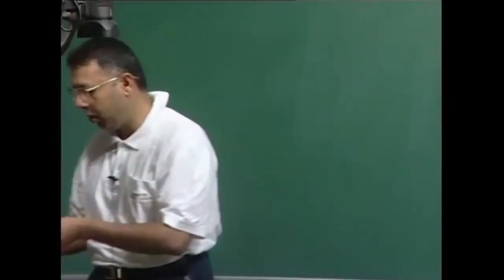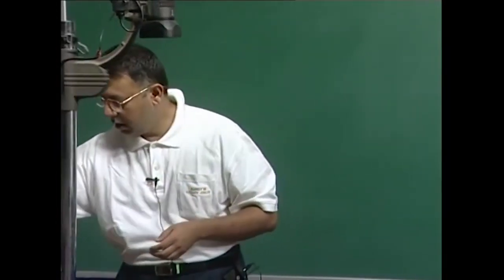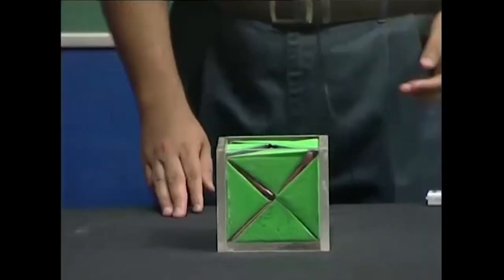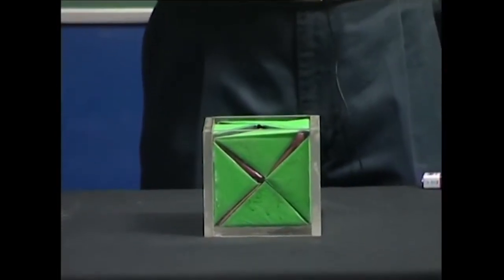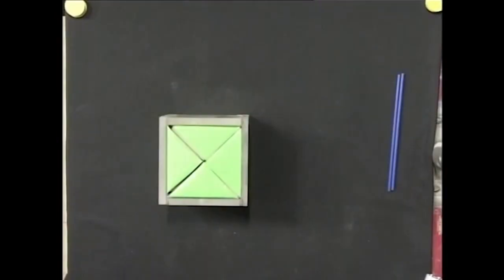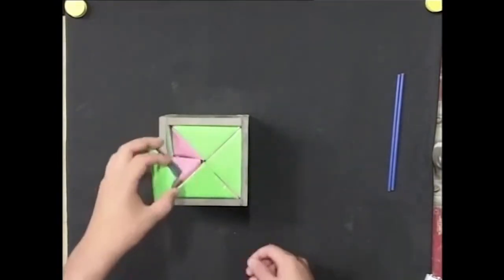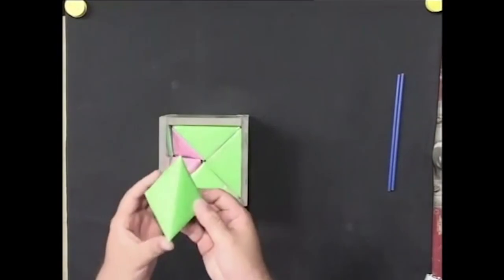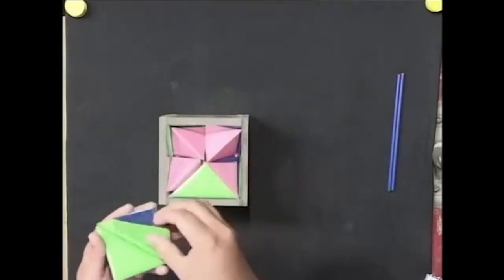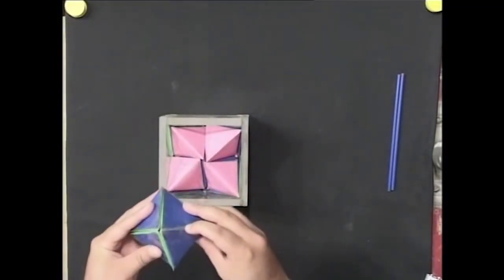Let us look at an alternate model of the FCC voids to understand how tetrahedra and octahedra are packed within the unit cell. The most important thing we noted was that the octahedral void is shared between four unit cells, meaning within a unit cell you get only one-fourth of an octahedral void. I can put together four of these quarter-voids to make a regular octahedron.